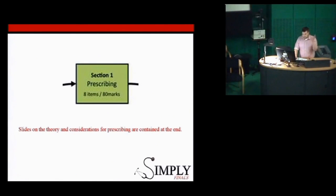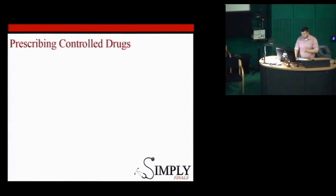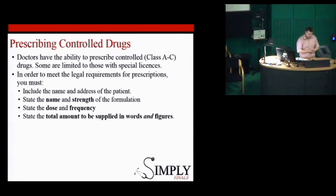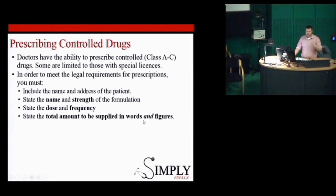All the theory about prescribing is at the end of the lecture, which you can look at later. Something that does trip people up is prescribing controlled drugs — things like morphine and certain benzodiazepines. A lot of this is just the standard stuff relevant for all prescriptions: ensuring you have the name and address of the patient, the name and strength of the formulation, and the dose and frequency.